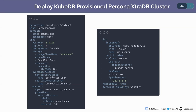We have also customized the system user secrets. System user secrets are used because the database uses different users for different tasks — for example, one user for monitoring and another for replication. You can customize the users with a username and password. In the monitoring section, we have provided the agent prometheus.io/operator and as a service monitor we have provided a label with the release name prometheus.